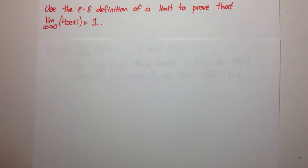Welcome to today's video everyone. Use the epsilon-delta definition of the limit to prove that the limit as x approaches 0 of 4x plus 1 is equal to 1.